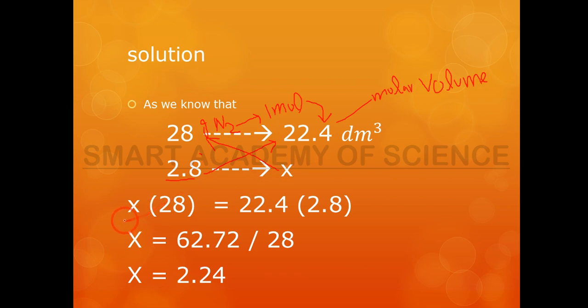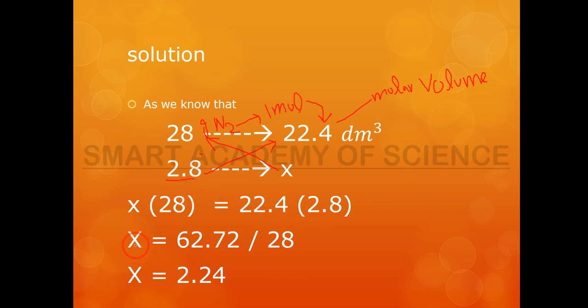Cross multiplication: x into 28 equals 22.4 into 2.8. We set up the division to solve for x.